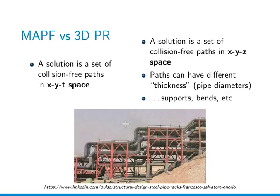Multi-agent pathfinding in its classical version is an abstraction of many problems including pipe routing and robotics. A solution of multi-agent pathfinding is a set of collision-free paths in xyt space — xy is a two-dimensional path but movement happens over time, so you have xyt. The similarity to pipe routing is that you have paths in xyz space, but here we also have more geometric constraints such as pipe diameters and other factors.